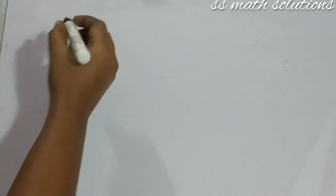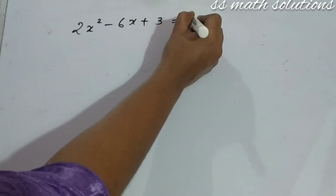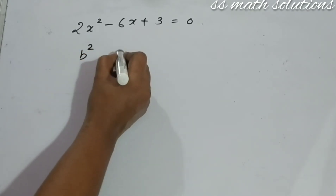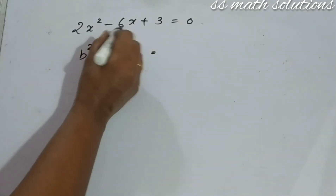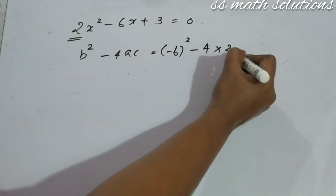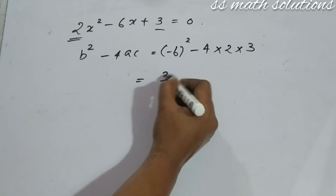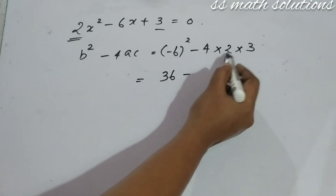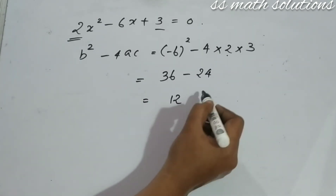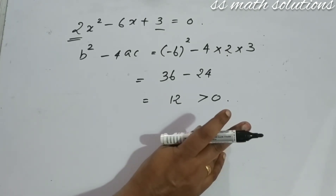Let's take one more equation: 2X squared minus 6X plus 3 equals zero. We need to find the discriminant. Discriminant B squared minus 4AC: B is minus 6, so minus 6 squared minus 4 times A which is 2, times C which is 3. That is 36 minus 8 times 3, which is 36 minus 24, giving us 12. Since 12 is greater than zero, the equation contains two distinct real roots.